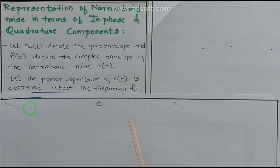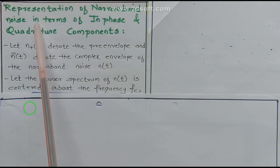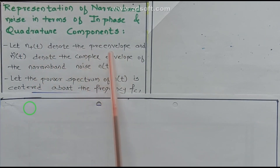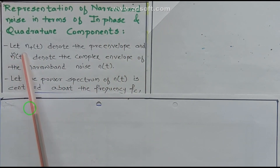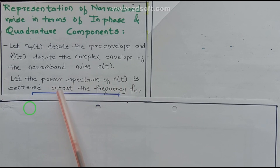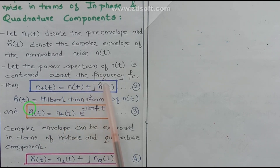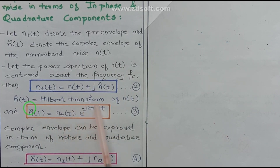Now we are going to represent the narrow band noise N(t) in terms of its in-phase and quadrature components. Let N_+(t) denote the pre-envelope and Ñ(t) denote the complex envelope of the narrow band noise N(t), with the power spectrum of N(t) centered about frequency fc. Then we can write N_+(t) = N(t) + j·N̂(t), where N̂(t) is the Hilbert transform of N(t). This is equation 2.